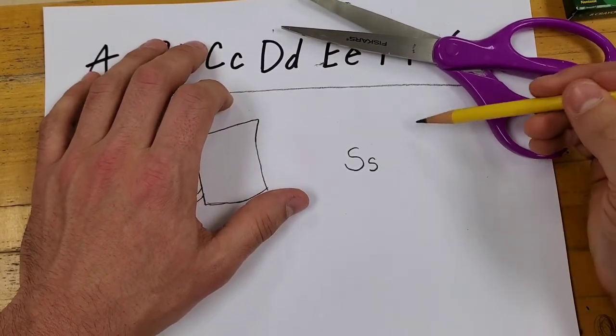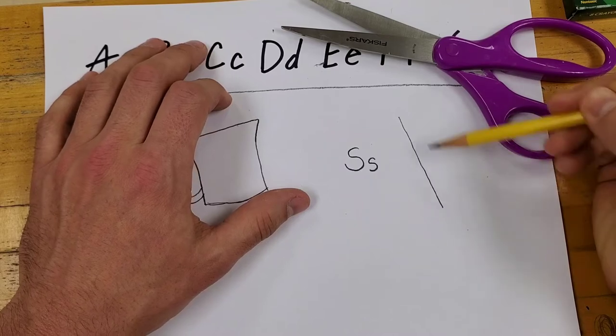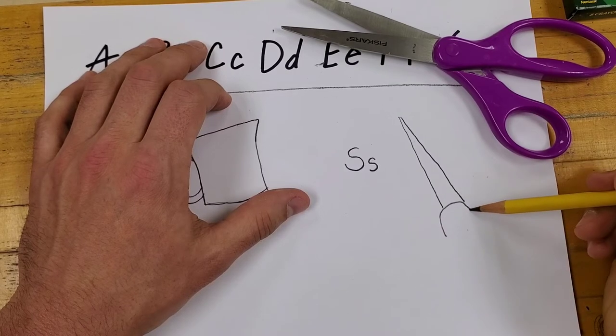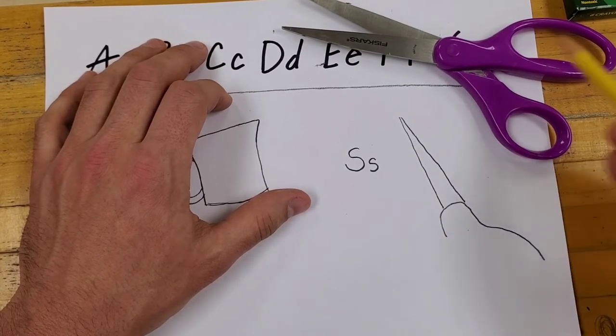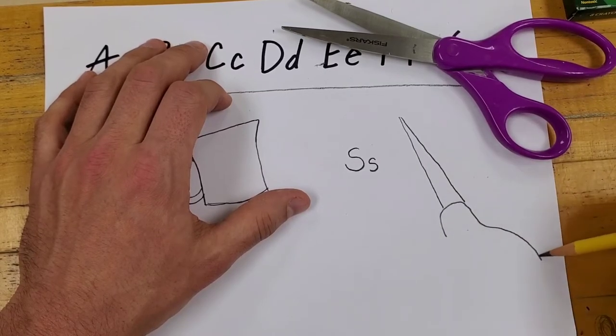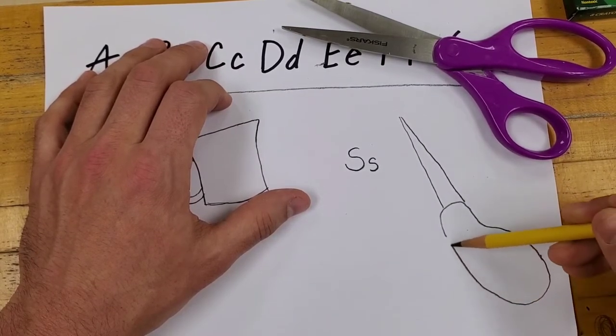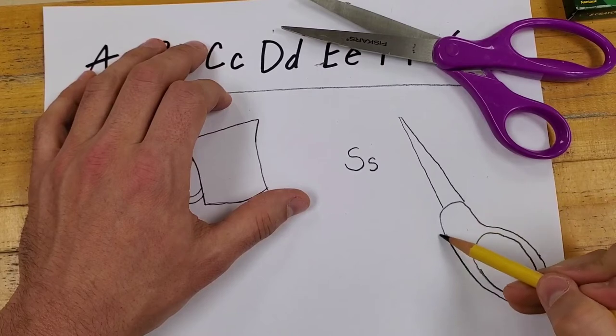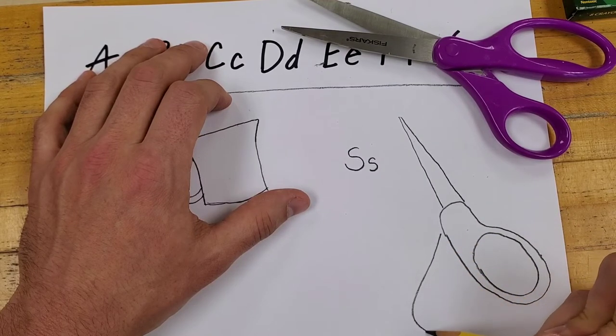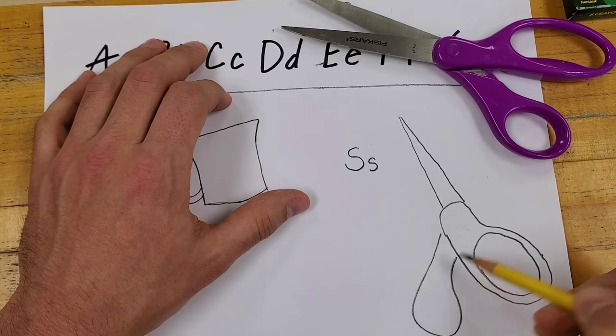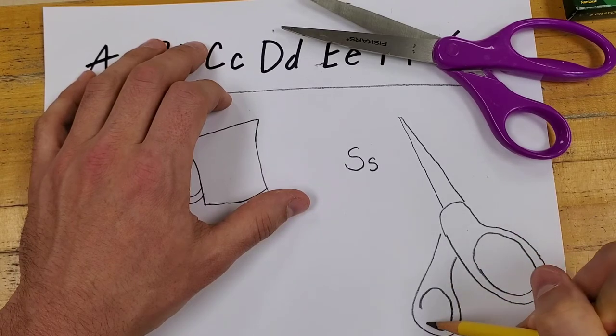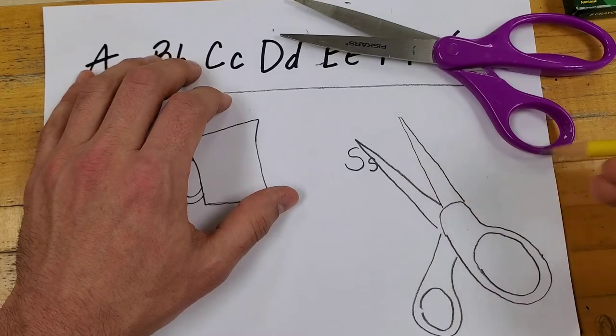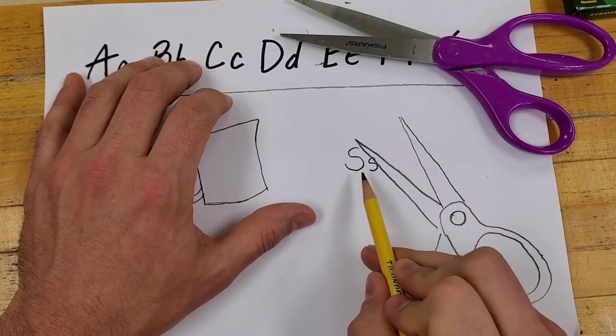But I'm just looking at the shapes that are involved in a pair of scissors here, and drawing what I see, just letting my eyes sort of travel around the shapes. And I've got myself a pair of scissors near the letter S.